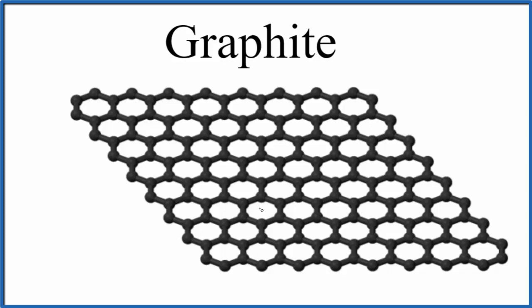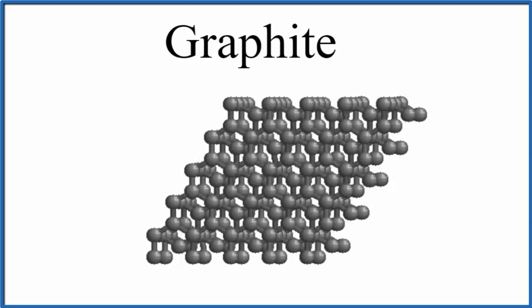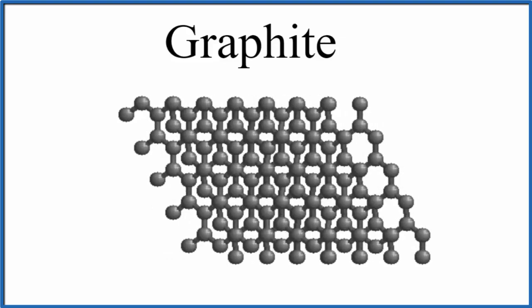It's helpful to look at it in three dimensions. So you can see here in this model, three-dimensional model, that we have sheets of these carbon atoms bonded together in graphite. So it's made up of these sheets.